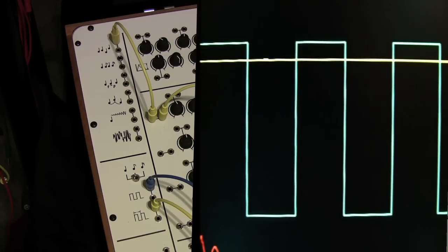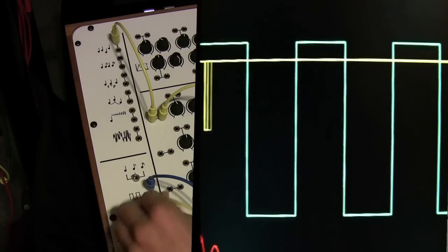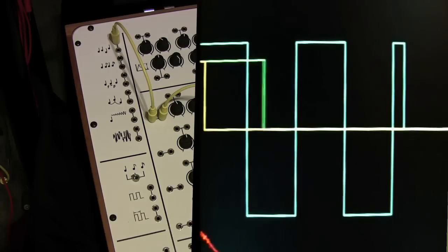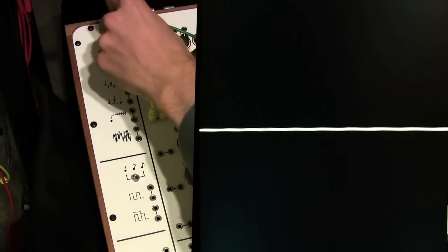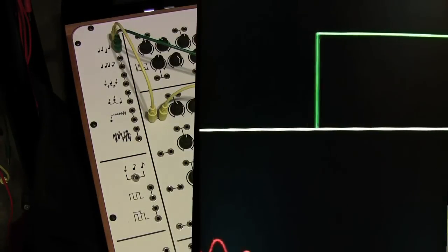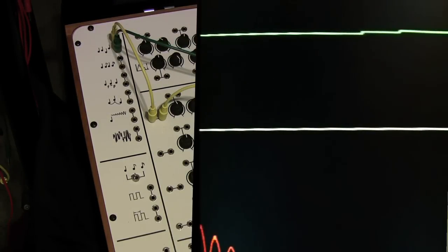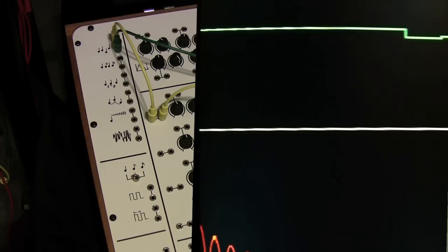This operates in the same manner as the CV or control voltage for the note data that we receive up in here. A traditional CV and gate controlled synthesizer uses this signal to represent the pitch whilst the gate represents the notes being played.